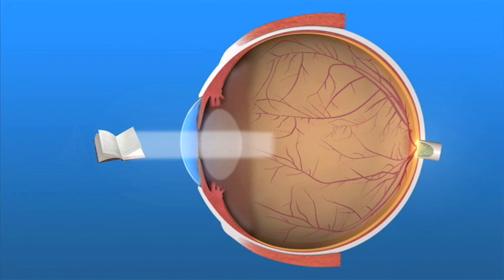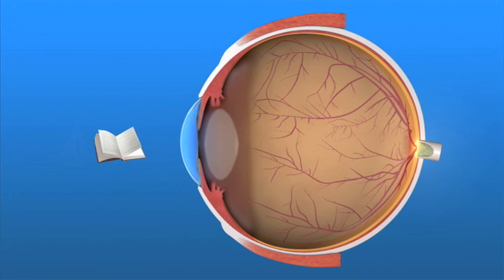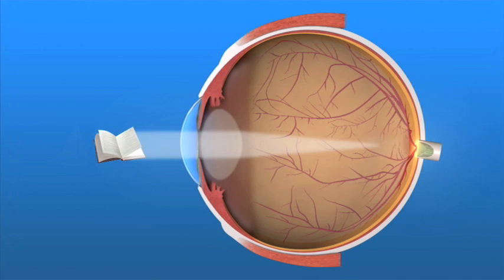Presbyopia. This is a normal condition that typically starts around middle age, when the eye's lens becomes less flexible and less able to focus on close objects. A typical sign of presbyopia is the need for reading glasses.